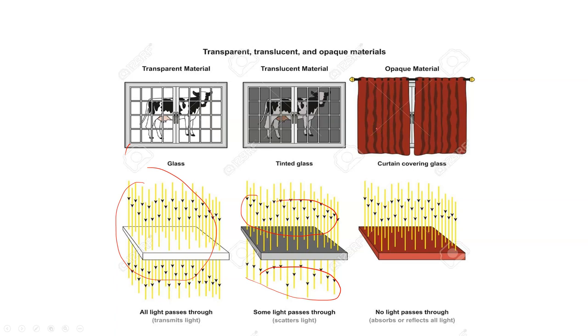Opaque material, on the other hand — you can't see anything. It completely blocks your vision. All the light hits it, nothing goes through, and you're not able to see anything. You can't see the cow anymore.